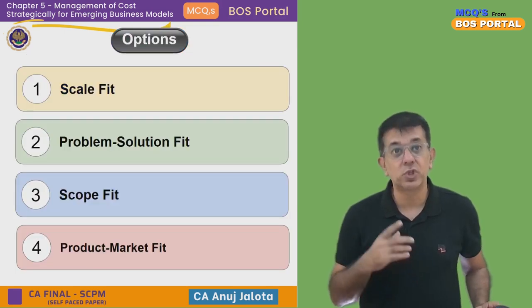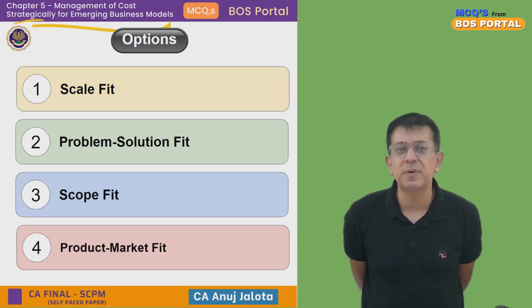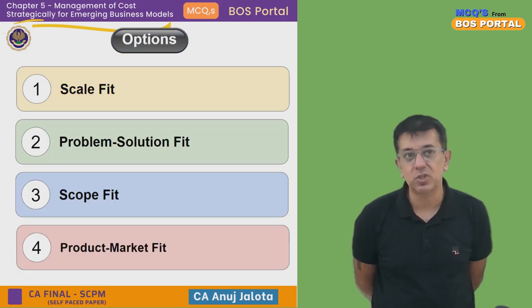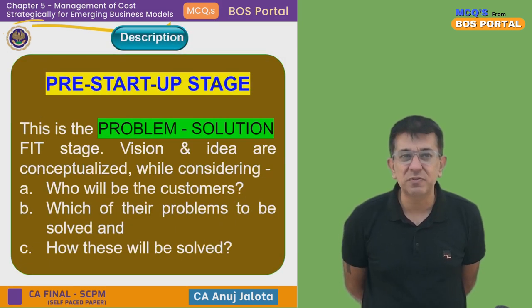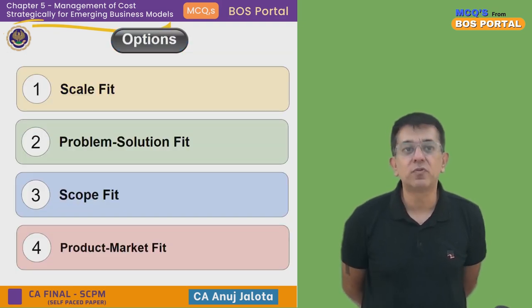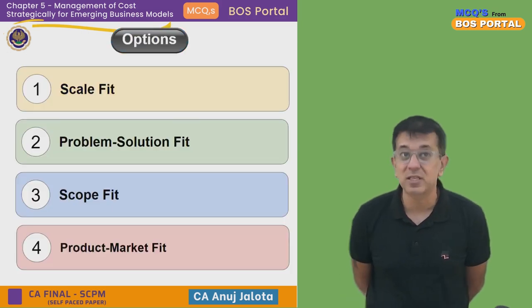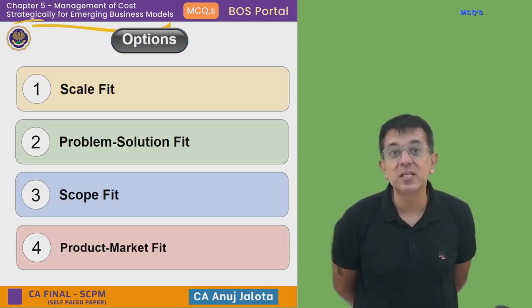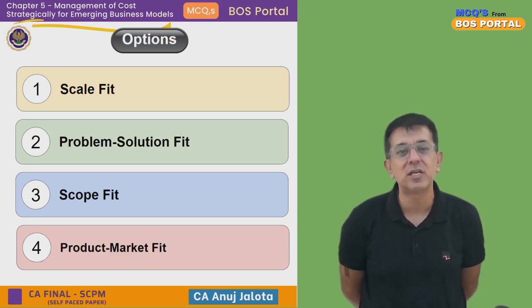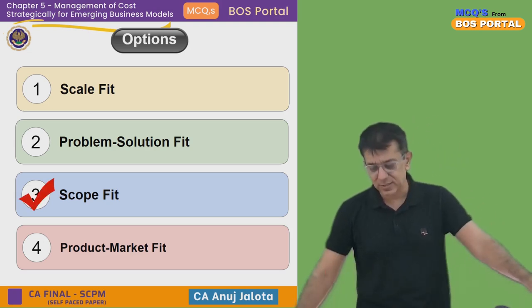Coming back to the question: Scale Fit is the last stage, Problem Solution Fit is the first stage, and Product Market Fit is the second stage. So the one that does not fit — the correct answer — is Scope Fit. There is no stage called Scope Fit. That is the correct answer.